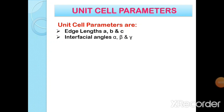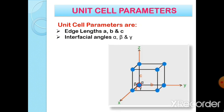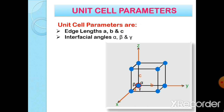Unit cell parameters are edge lengths A, B, and C, and interfacial angles alpha, beta, and gamma. In this figure you can observe edge lengths A, B, and C, and the interfacial angles represented by alpha, beta, and gamma.